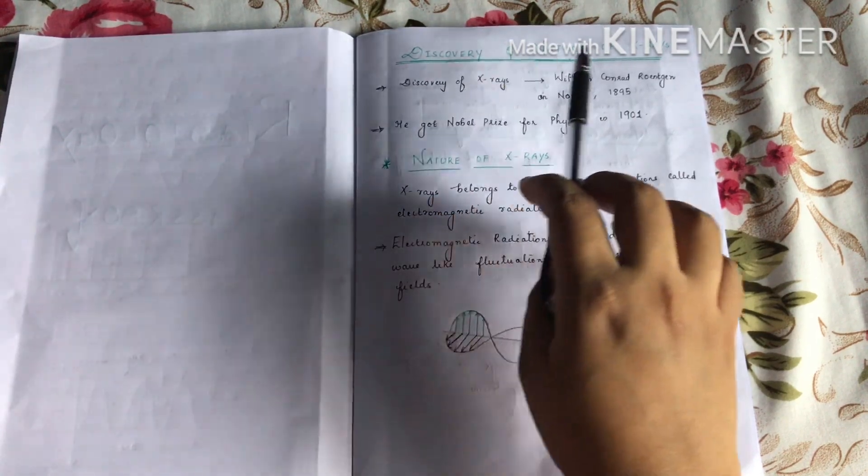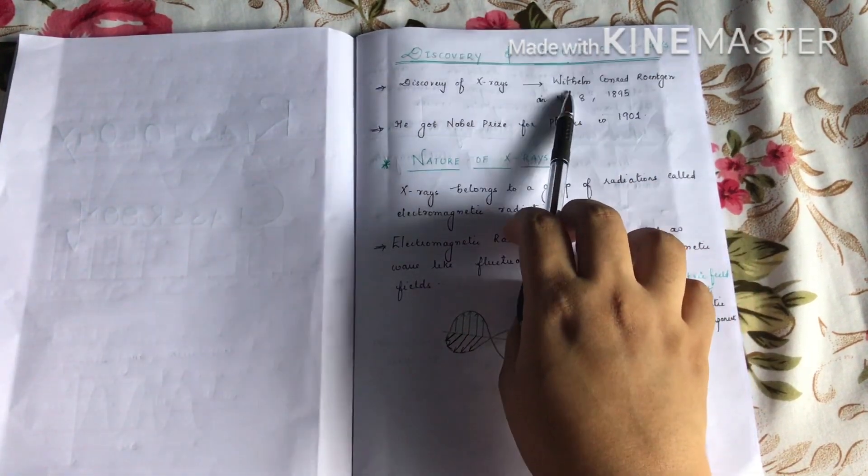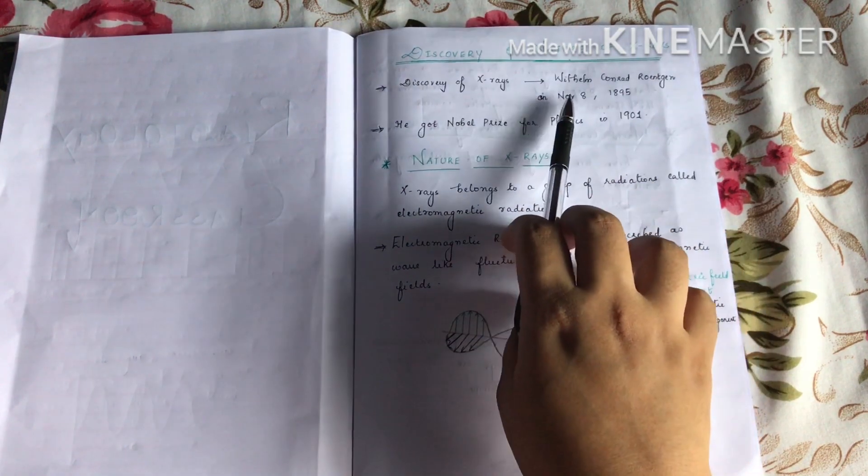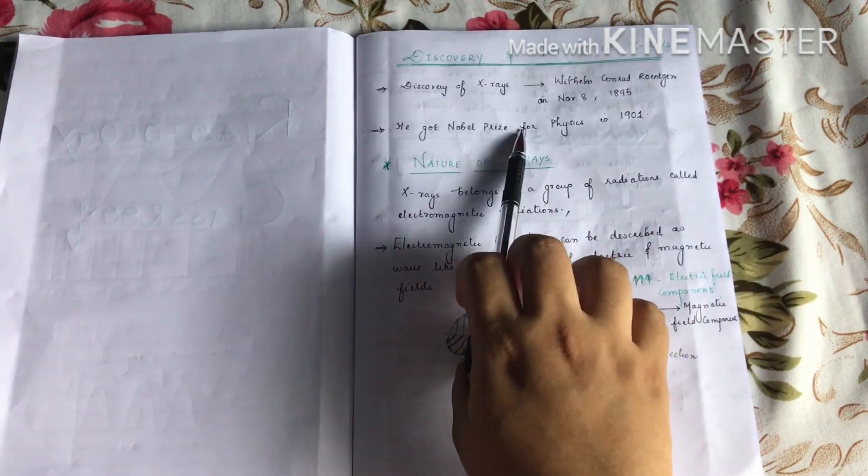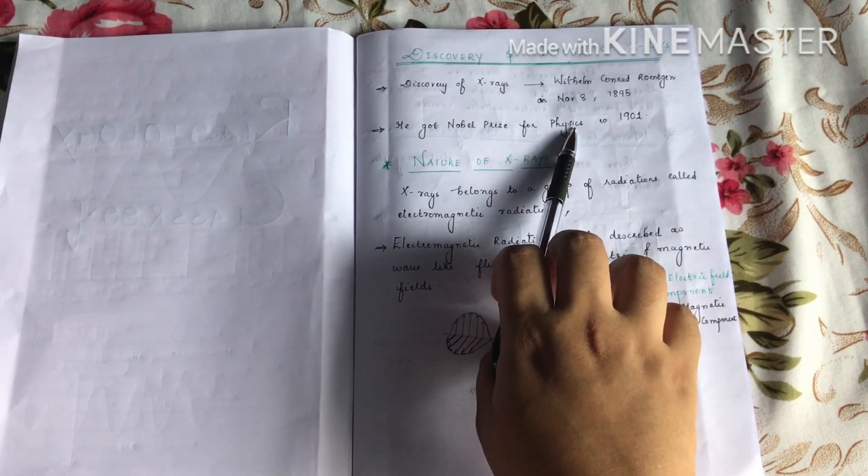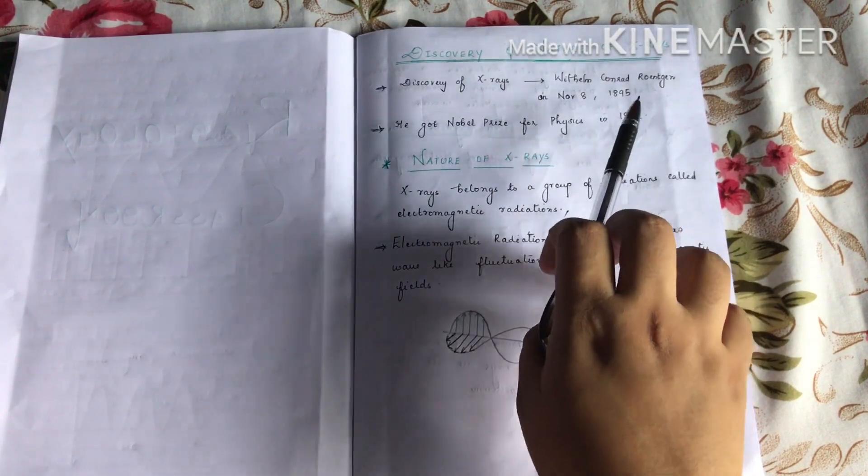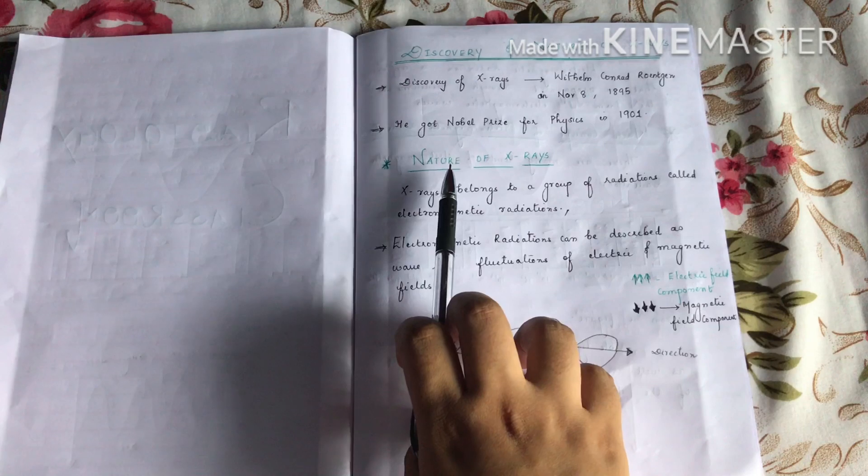First topic: discovery and nature of X-rays. First we will learn who discovered X-rays. Wilhelm Conrad Röntgen on November 8, 1895, and he got the Nobel Prize for Physics in 1901 for his discovery.